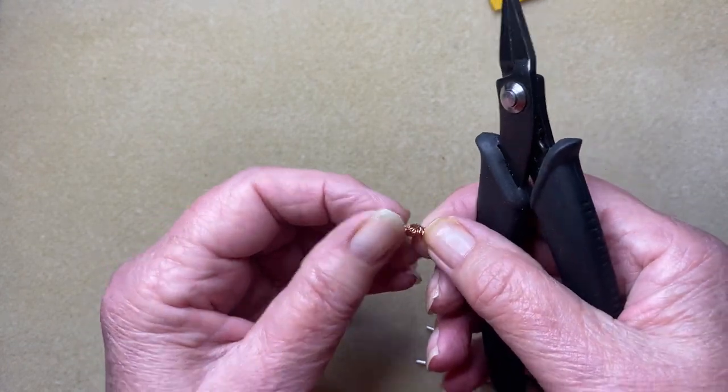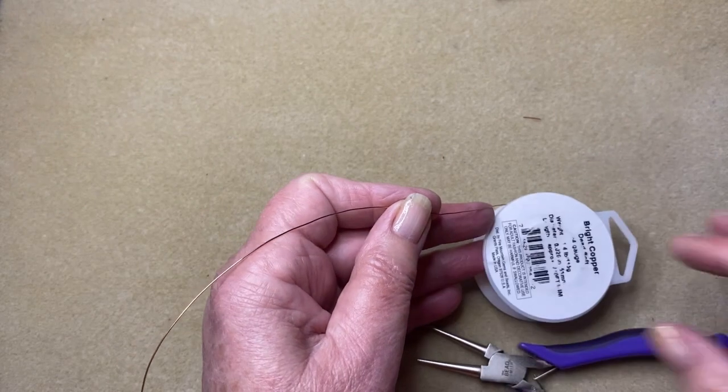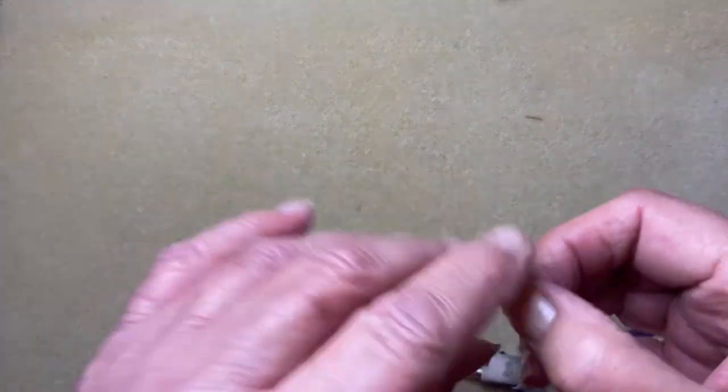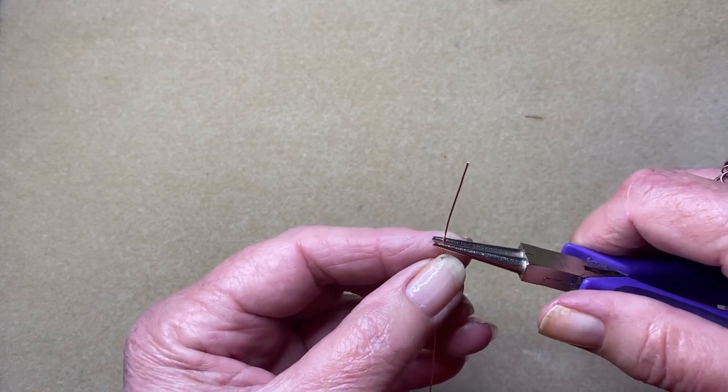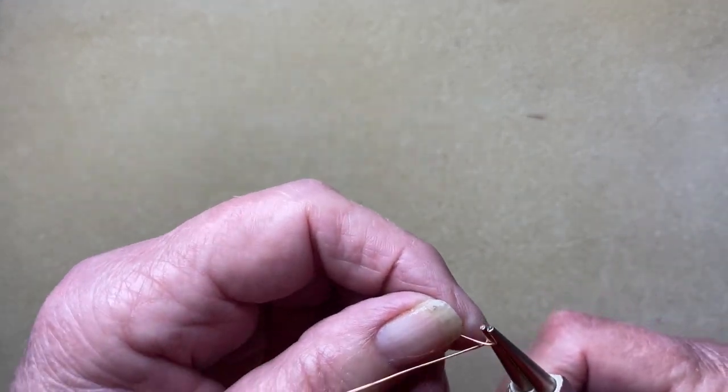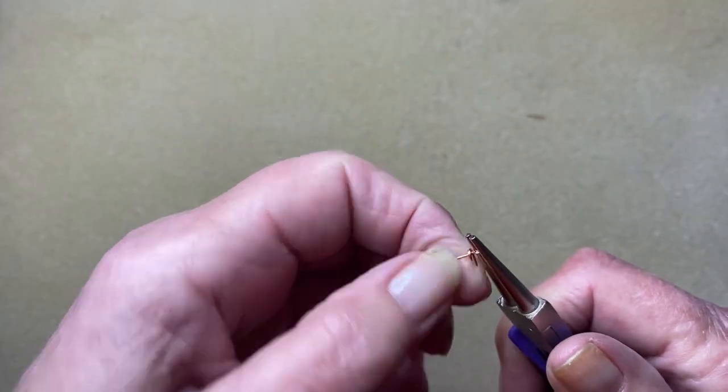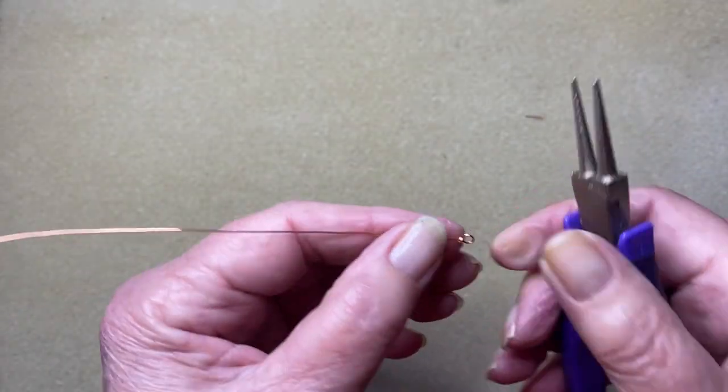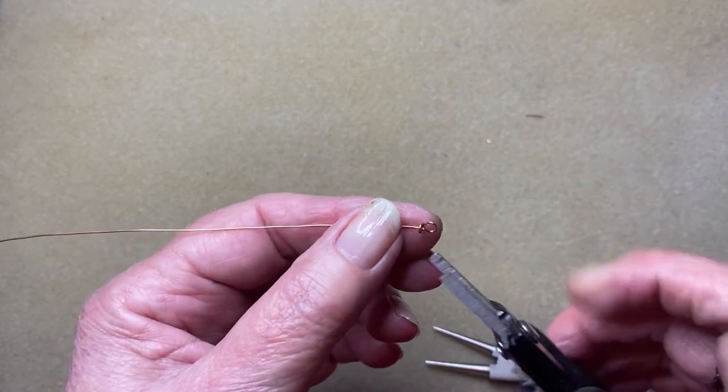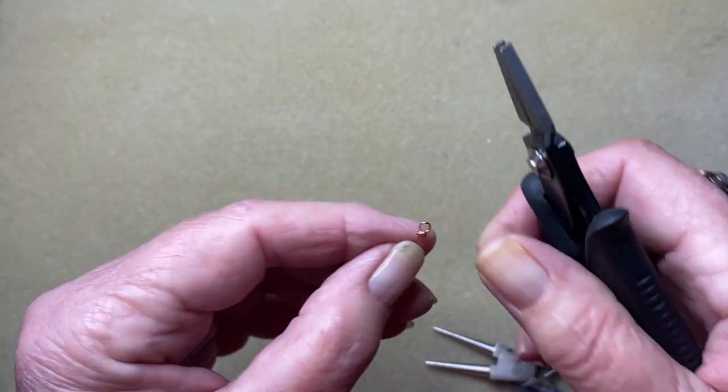I'll do one more of those. Again, just cutting down a little way, doesn't have to be too accurate. Making your loop, wrapping that bit around until you can't wrap it anymore and trim off what's left. Tap that piece down. And I said you don't have to be too worried about it because it's all going to be buried anyway. You just don't want any sharp bits sticking up anywhere.